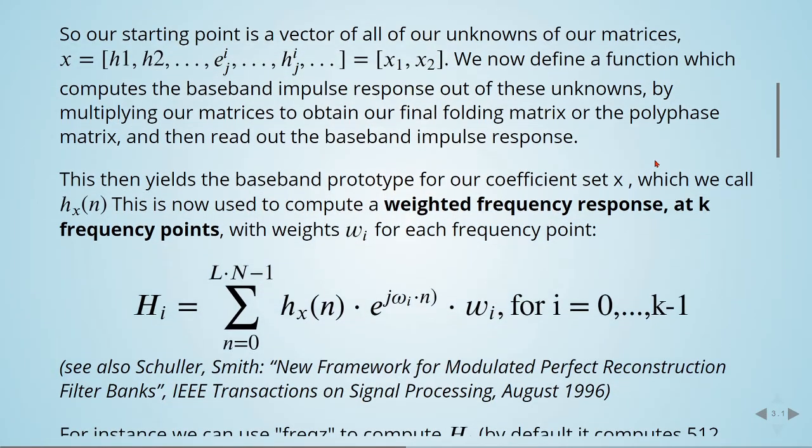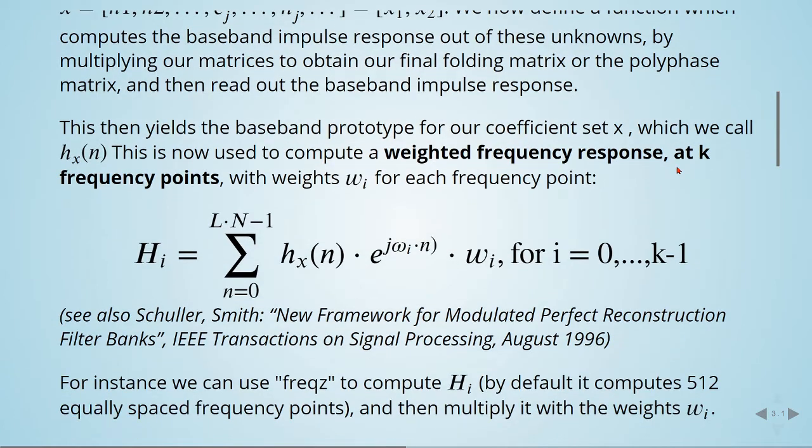This then yields a baseband prototype for our coefficient set x, which we call h_x(n). This is now used to compute a weighted frequency response at k frequency points with weights w_i for each frequency point. This is given here, and you can see more in this paper from IEEE Transactions on Signal Processing: 'New Framework for Modulated Perfect Reconstruction Filter Banks' by Schüler and Smith.